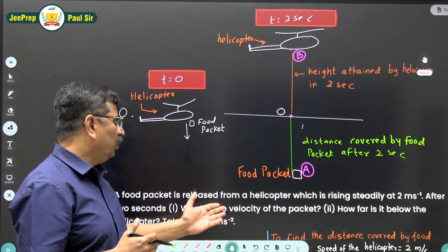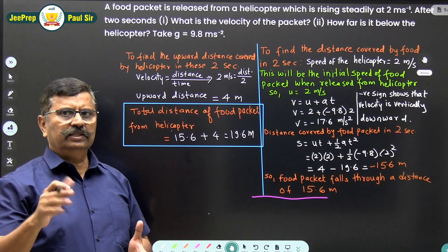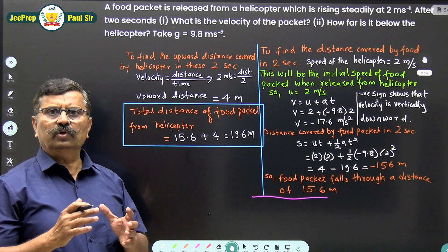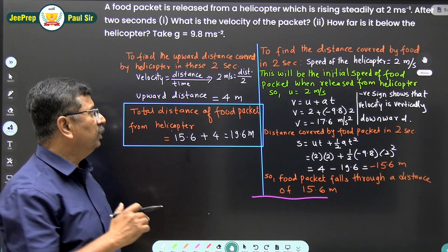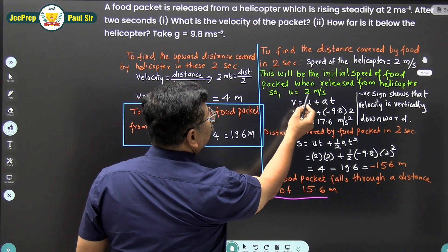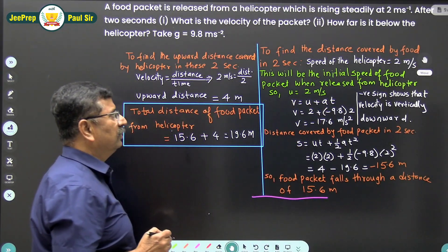we will calculate the velocity of the food packet. As the food packet is released from the helicopter, the initial velocity of the food packet is the velocity of the helicopter. So I have taken u = 2 m/s.